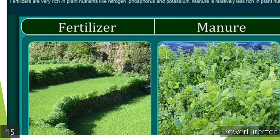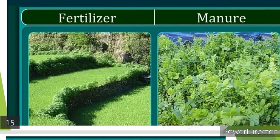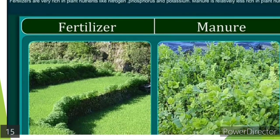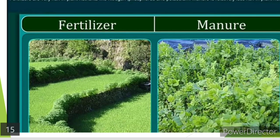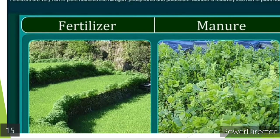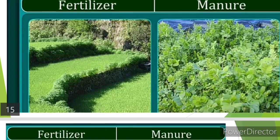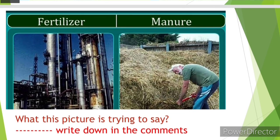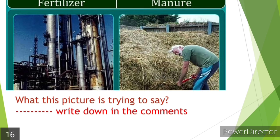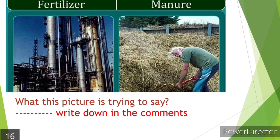In the long term, fertilizers disturb the fertility of the soil. You may get a good quality crop in the short term, but the texture of the soil will be disturbed — the water holding capacity may also be affected. By using manure, you may not get a very glossy-looking crop, but in the long term it will not disturb the texture of the soil at all. There is one more basic difference shown in the picture — study the picture and write in the comment box what it is trying to tell you. It's very easy!